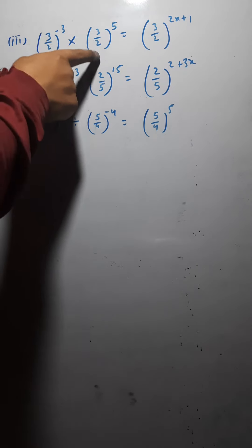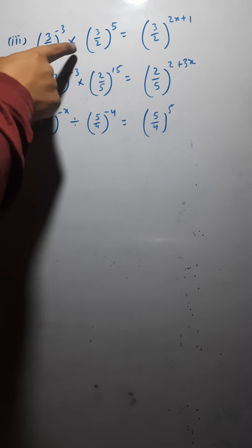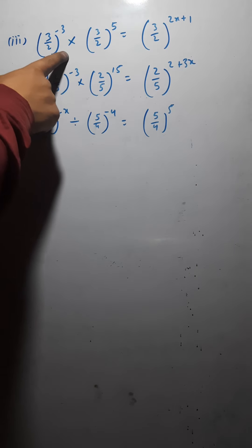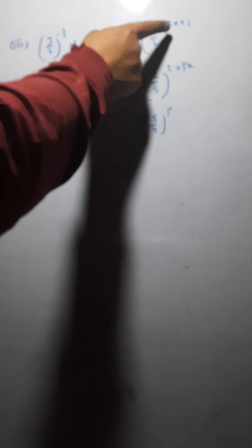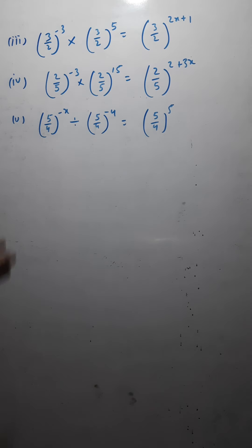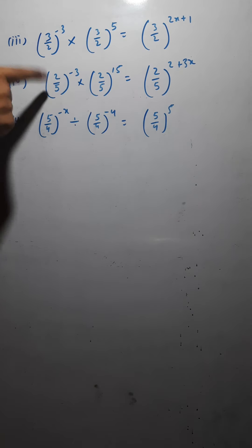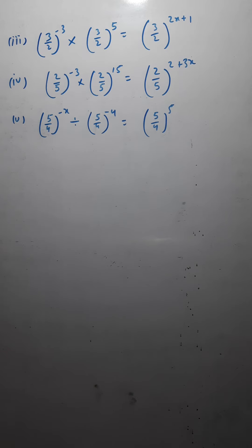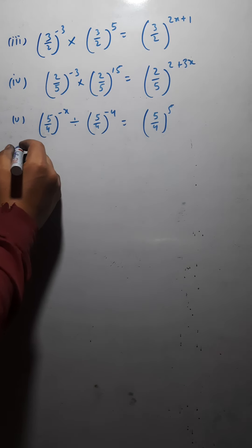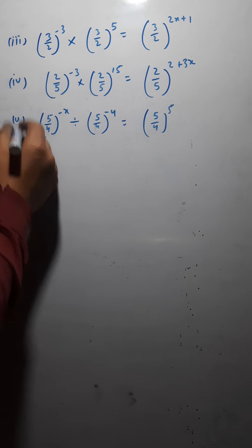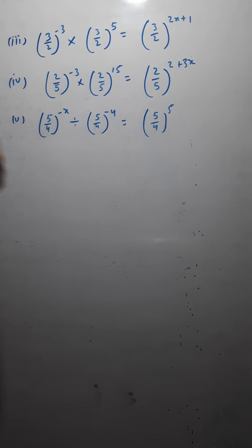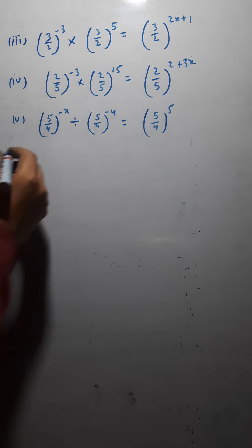The third and fourth questions you have to solve on your own. Now let me tell you the fifth question. As I have already told you, if a raised to the power m is divided by a raised to the power n, you write it as a raised to the power m minus n. In case of multiplication you add; in case of division you subtract the exponent.